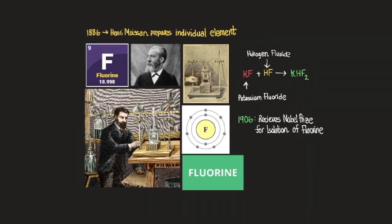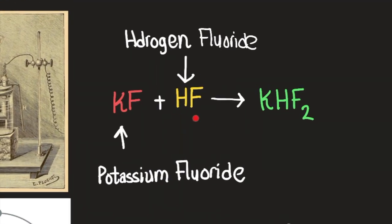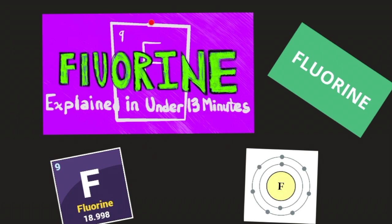Henri Moissan then prepared the individual element by combining potassium fluoride with hydrofluoric acid — the hydrofluoric acid that everyone before him had been working to prepare was necessary for this final separation. As we can see, hydrofluoric acid is used in the formula to create pure hydrogen fluoride. Thank you guys so much for watching — that was fluorine explained in under 13 minutes. Subscribe to stay tuned as we cover all of the elements.